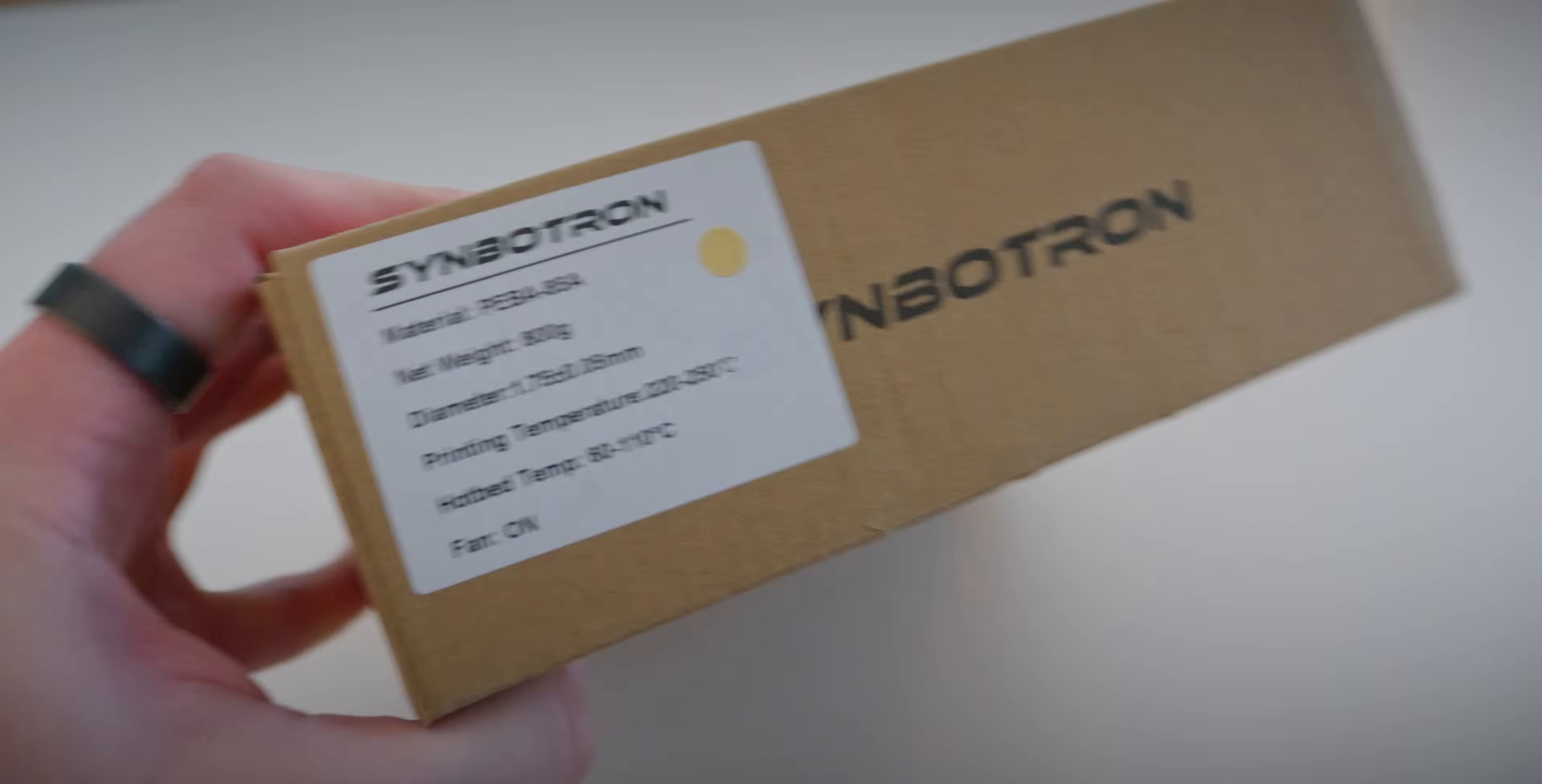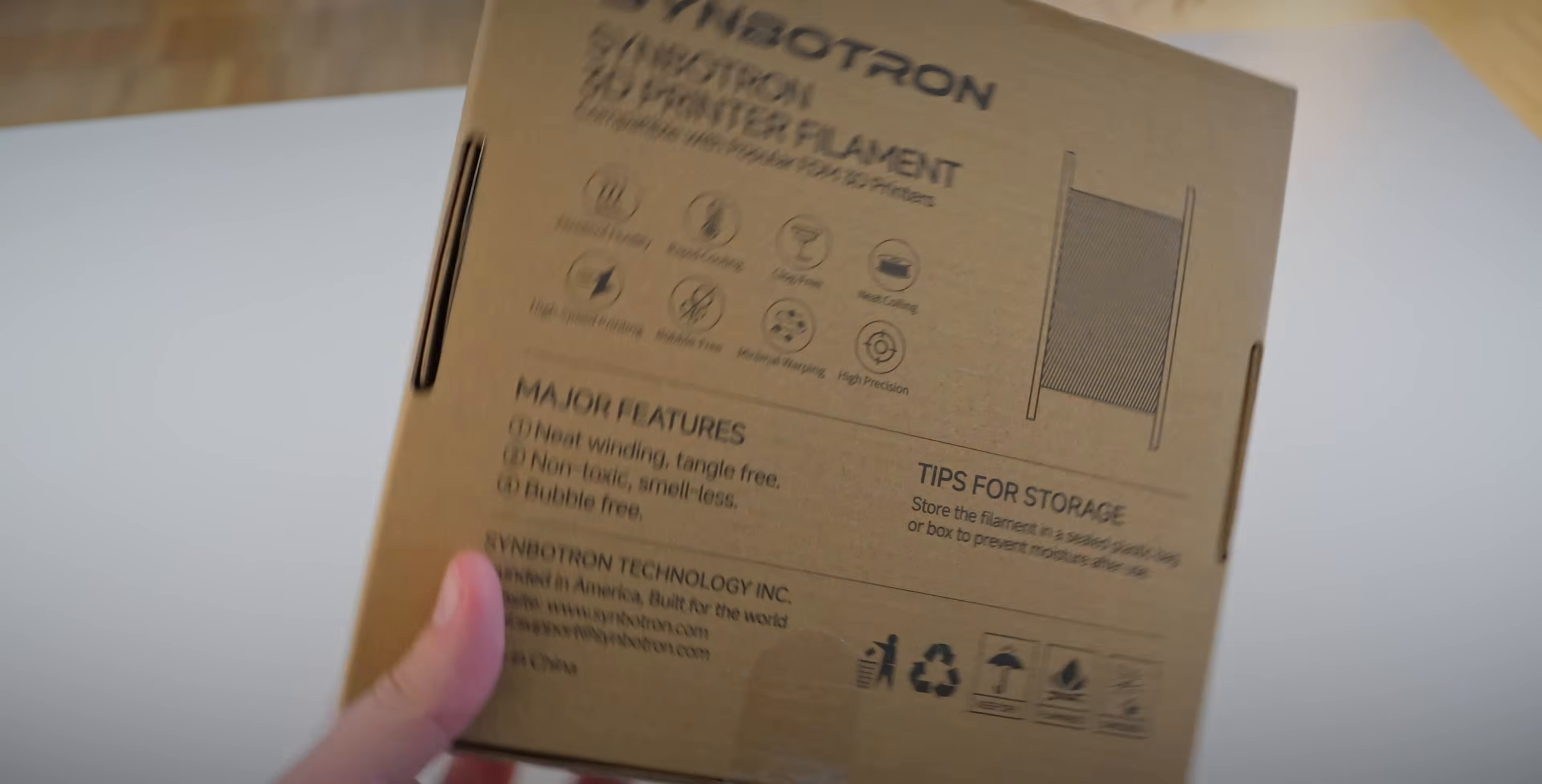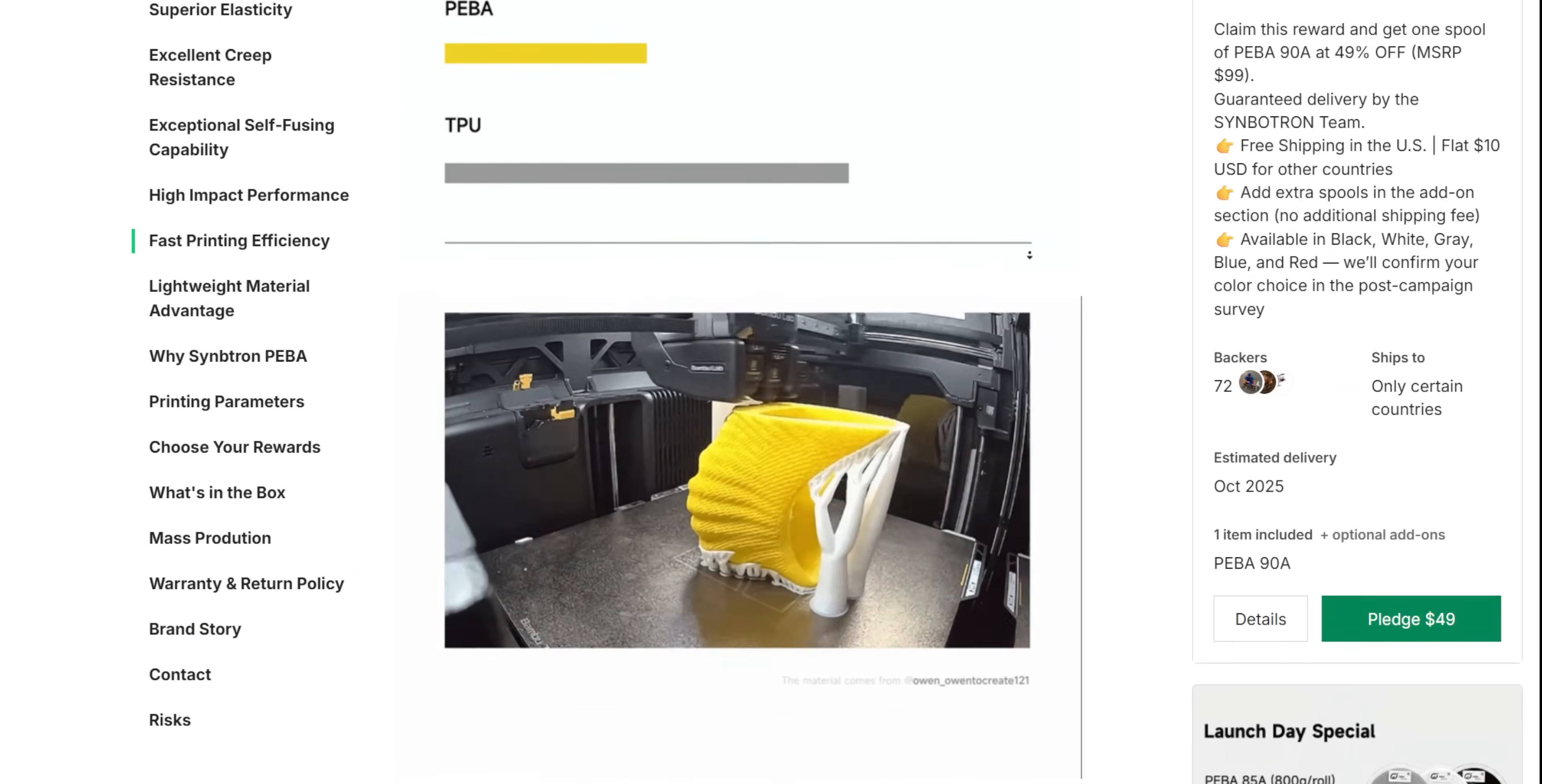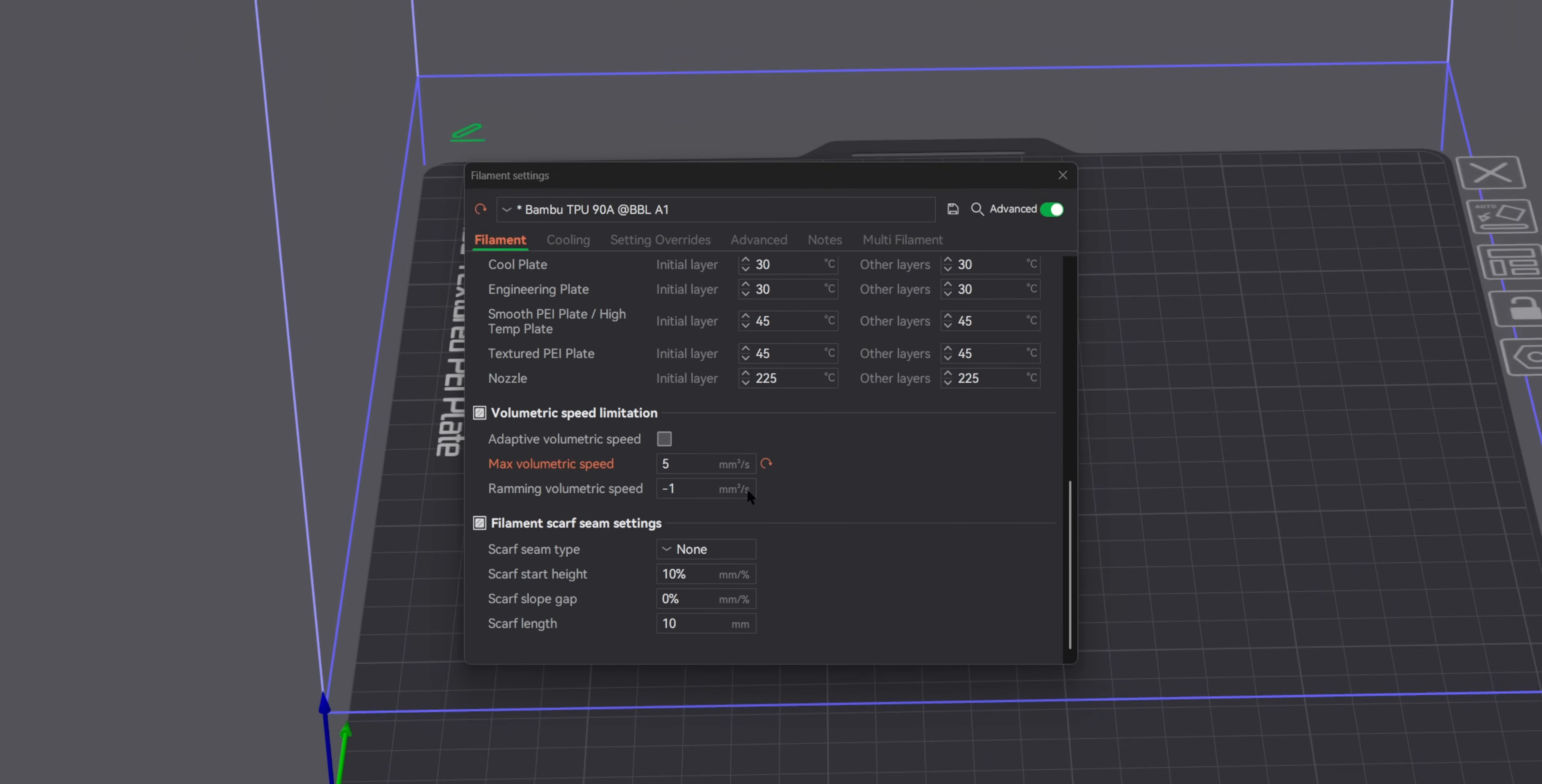So this company approached me, they're called Symbotron. They developed a new 3D printable PEBA. And the thing I was excited about is that they claimed it prints twice as fast as TPU. And as I know, TPU has some quality issues when printed fast.